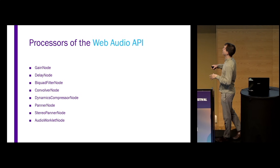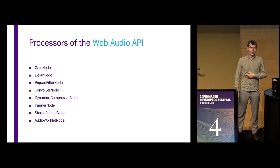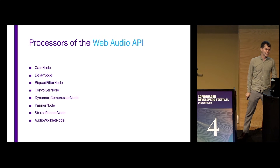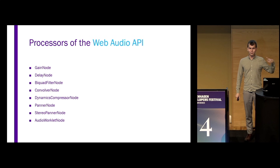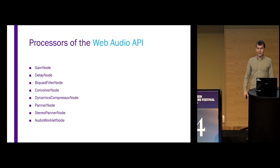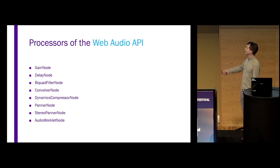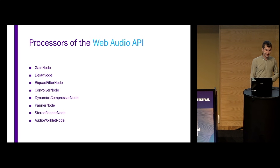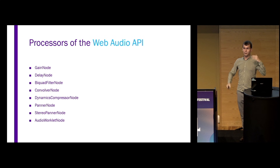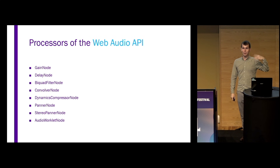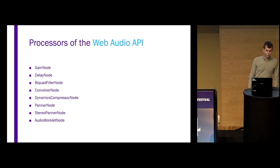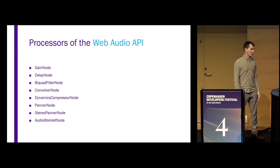Then there are a lot of different processors — I haven't listed them all. One of the most interesting or most used ones is the gain node, being able to change the volume of whatever sound you generated. And then there are more complex ones, like the dynamic compressor node that can merge sounds and ensure they're not going to peak when outputted. Or the biquad filter node, which is familiar to those who've worked with audio engineering — being able to make low-pass filters, band filters and stuff like that for filtering your sound to maybe remove noise.